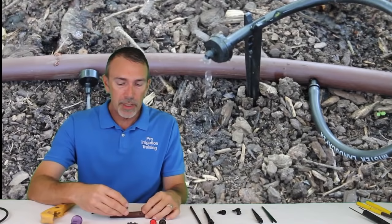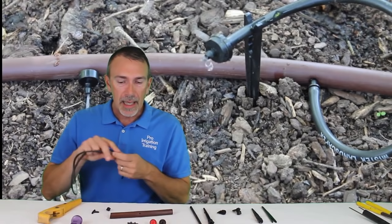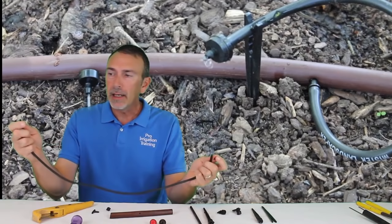If we need water right here where this tubing is, we'll put our dripper in and drip right there, or we can use a coupling to insert in and then